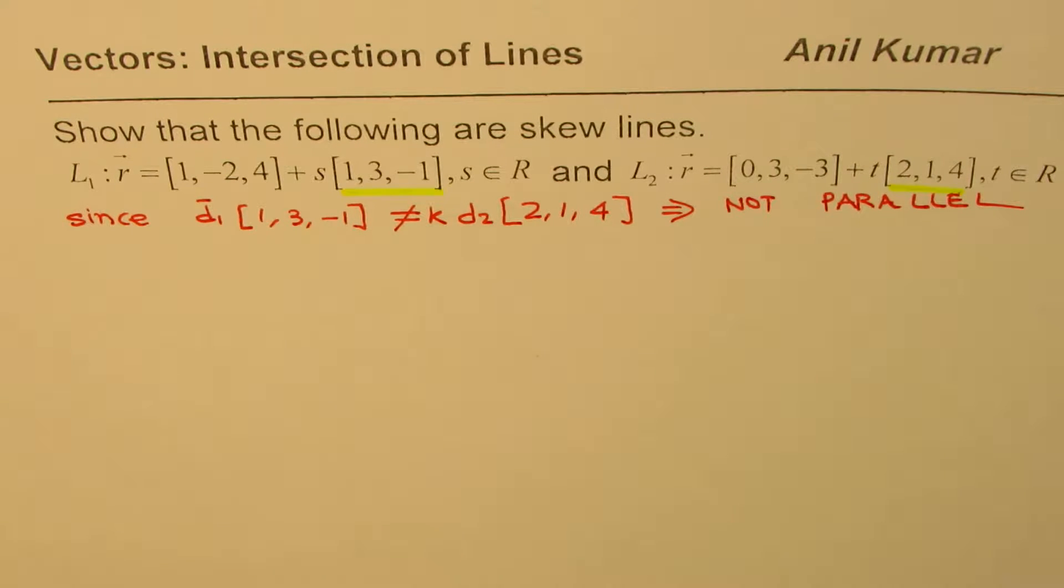That is the first observation. So if they are not parallel they have to intersect if they are in the same plane, but if they are in planes which are parallel they will not intersect.